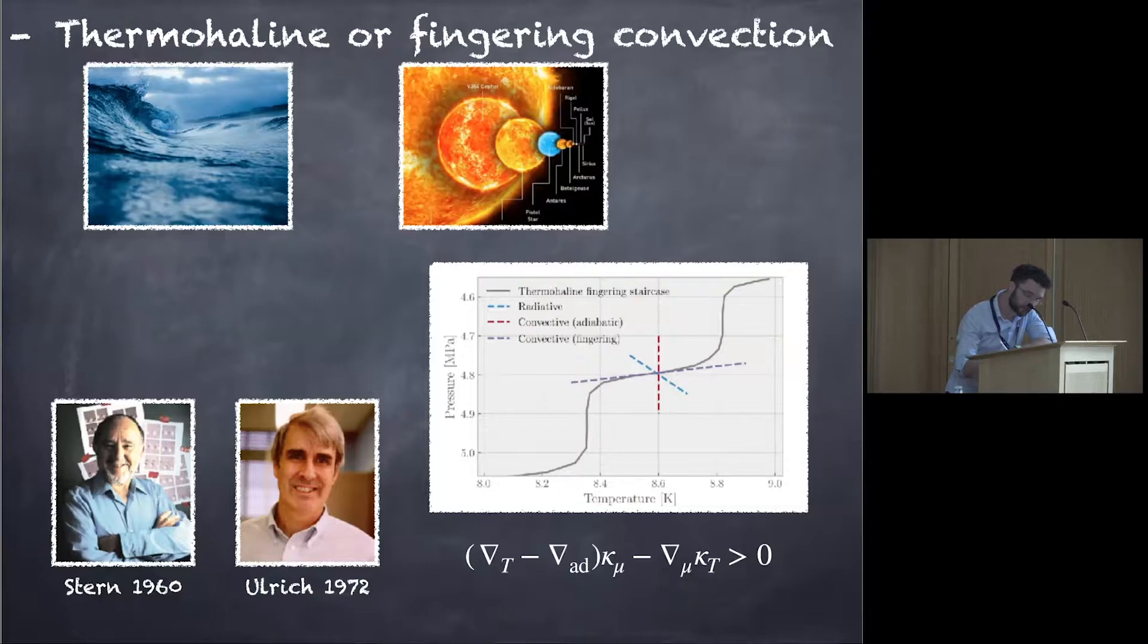So you're going to have these steps that are actually convective adiabatic, which means isothermal in the ocean because water is incompressible, so an adiabatic layer is going to be isothermal. And in between then, you're going to have fingering convection that is going to produce a completely inverted temperature gradient. So it reduces the temperature gradient compared to the isothermal one.